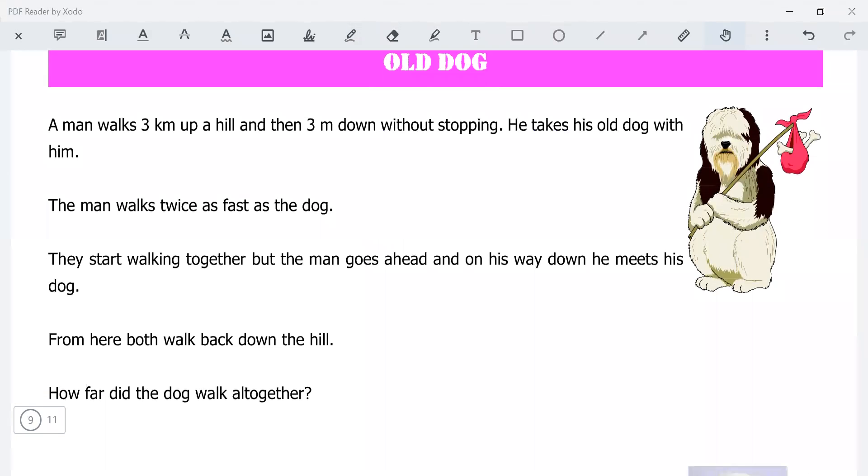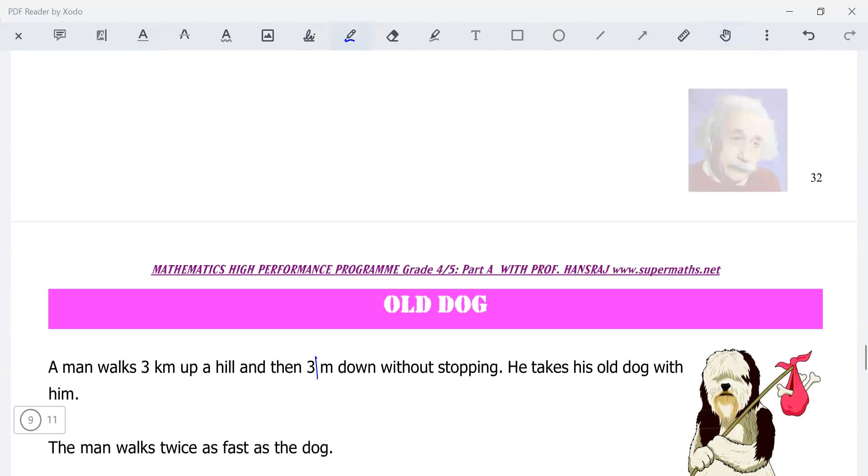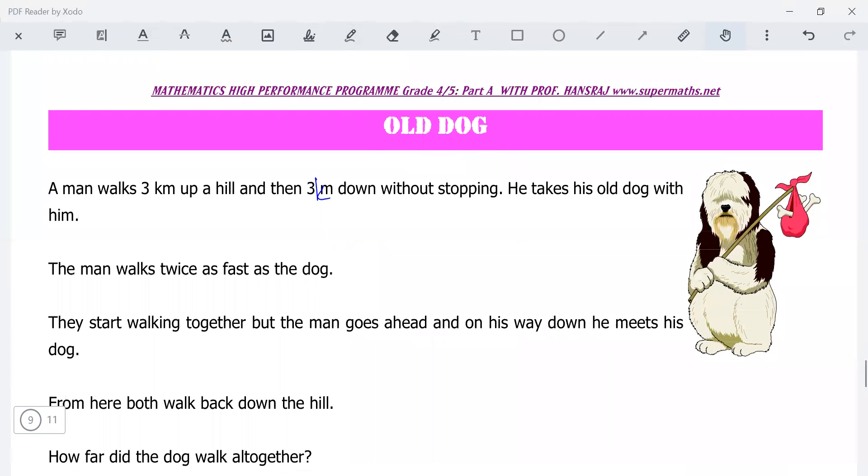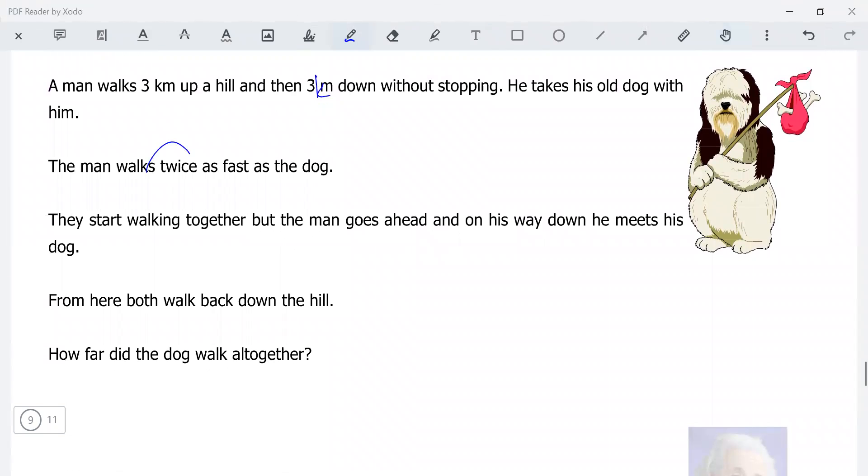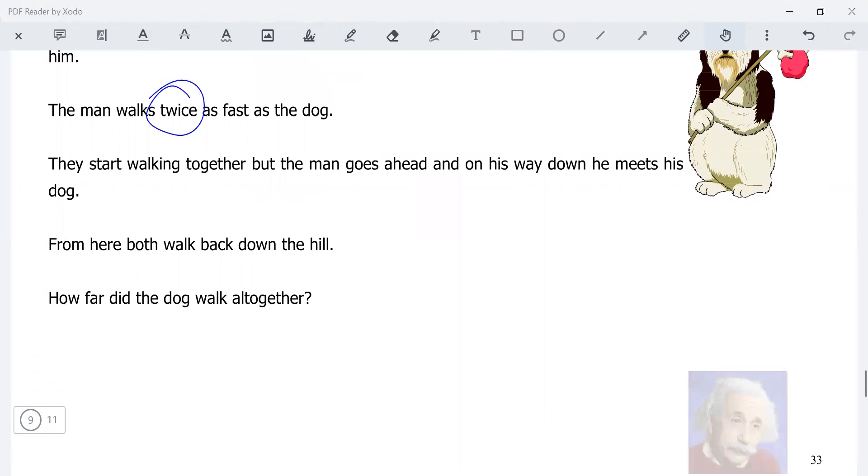A man walks three kilometers up a hill and three kilometers down without stopping. He takes his old dog with him. The man walks twice as fast as the old dog. They start walking together, but the man goes ahead, and on his way down he meets his dog. From here, they both walk back down the hill. How far did the dog walk only? So draw a picture.